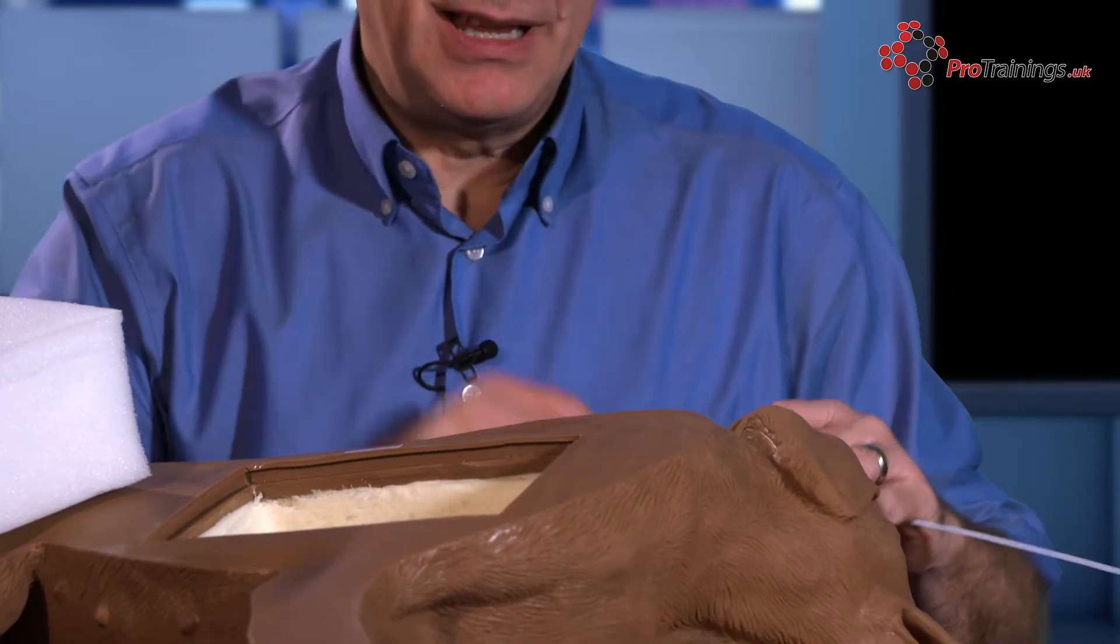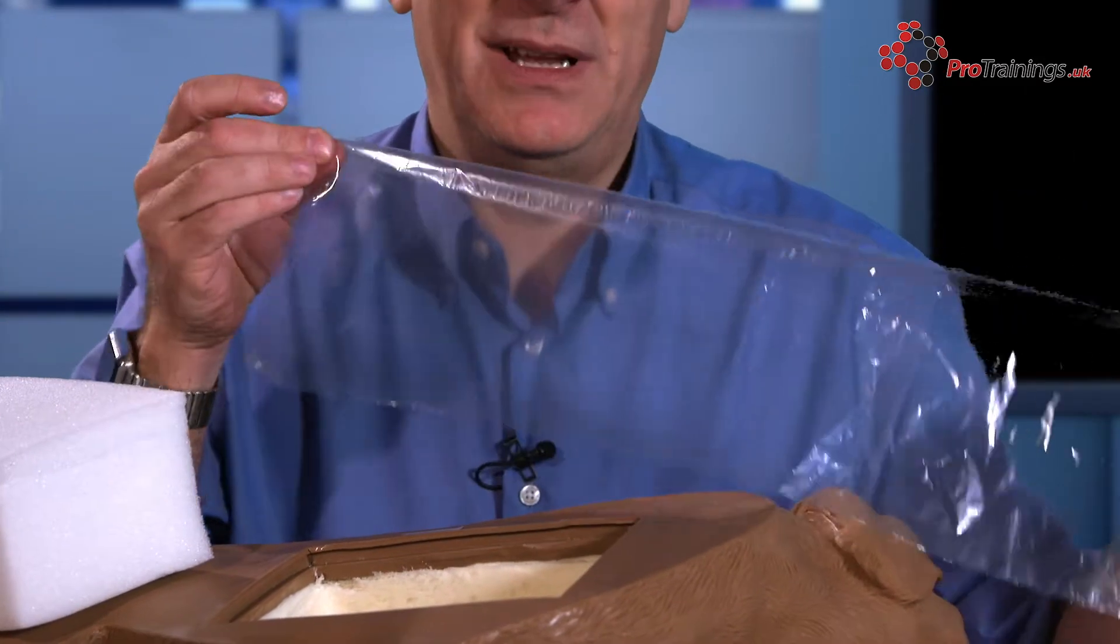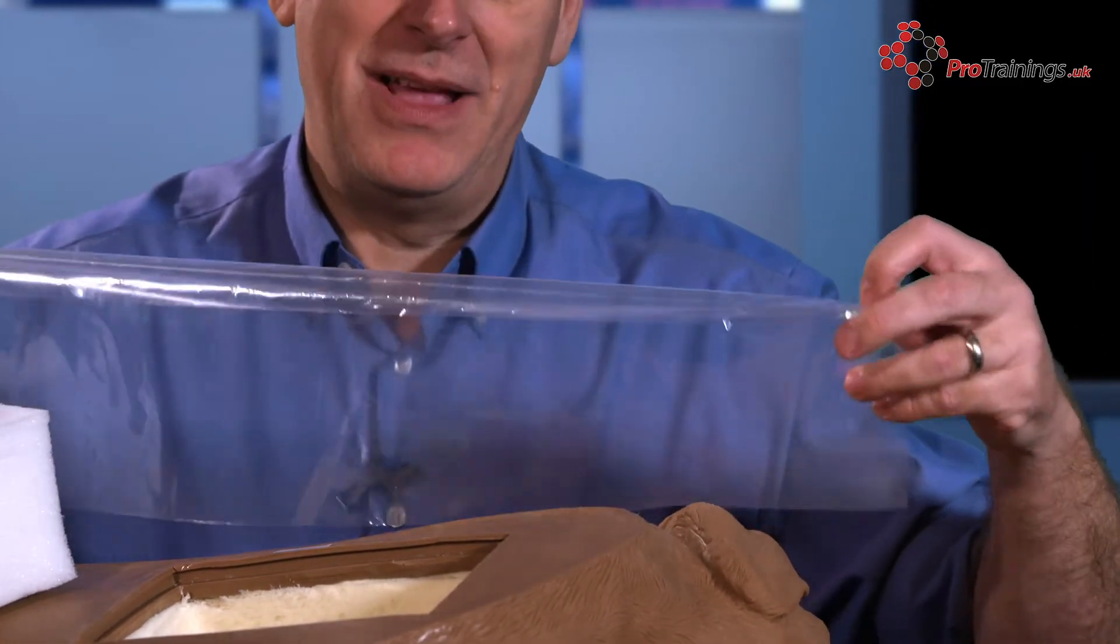Next thing is to look at the lung bag. The lung bag itself is a plastic bag - on one end it's sealed and the other end it's open. We need to make sure we put it in the right way because we want the open end by the nose.